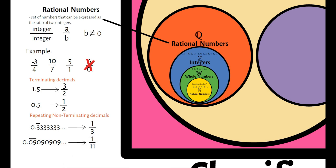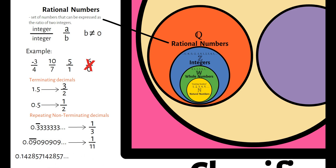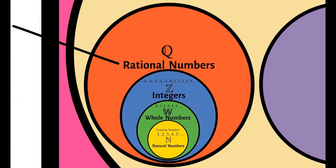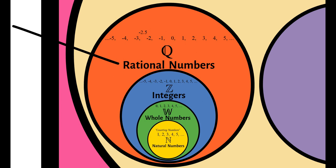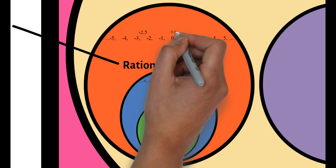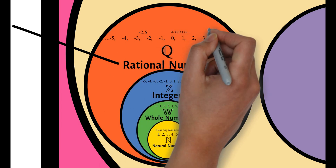Another example is 0.142857142857 and so on. In this example, merong 6 na digits ang umuulit infinitely. Pwede natin i-convert ito into fraction 1 over 7. So ang mga rational numbers ay ang mga numbers na integers, terminating decimals, repeating non-terminating decimals, at fractions.